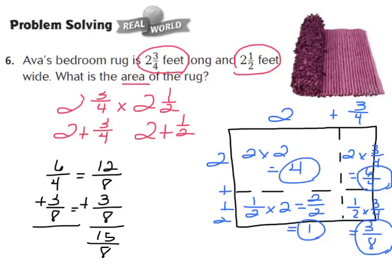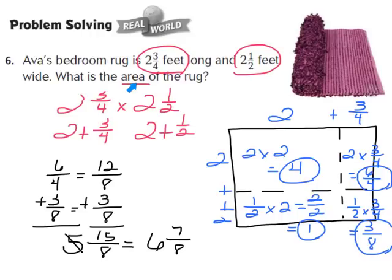I still have two whole number areas: 4 and 1. 4 plus 1 is 5, and adding 5 to 15/8 gives 5 and 15/8. But 15/8 is an improper fraction. 8 goes into 15 one whole time, so we bump 5 up to 6, and 15 minus 8 leaves 7 as the numerator. The denominator stays 8. So the area of the rug is 6 and 7/8 square feet.